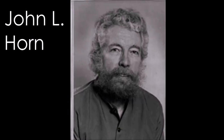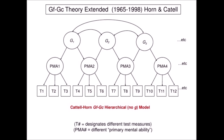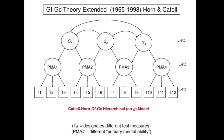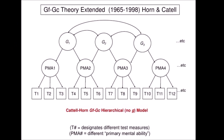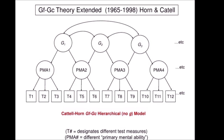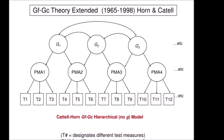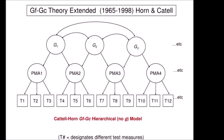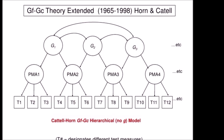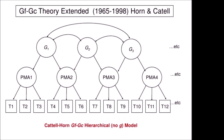Cattell's theory was almost forgotten, but Cattell's student John L. Horn revived it in 1966. Horn argued that fluid and crystallized intelligence were only two among several factors, and Horn eventually identified nine or ten broad abilities. Despite these revisions of the theory, the theory continued to be called GfGc theory.